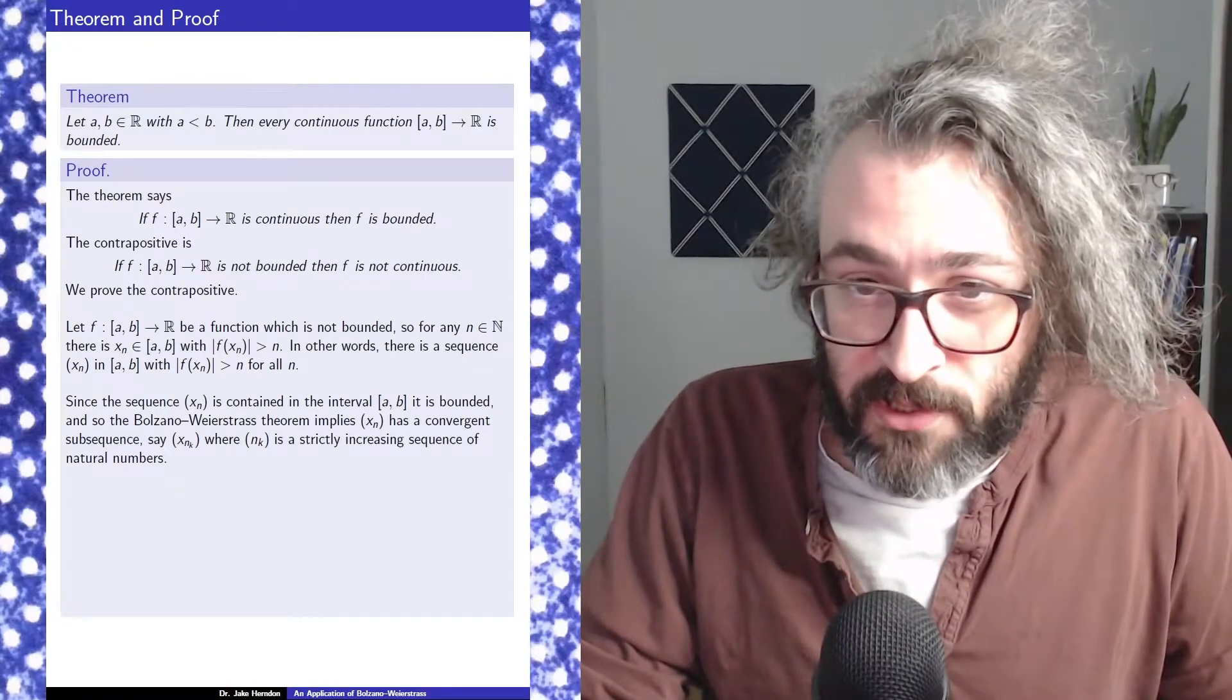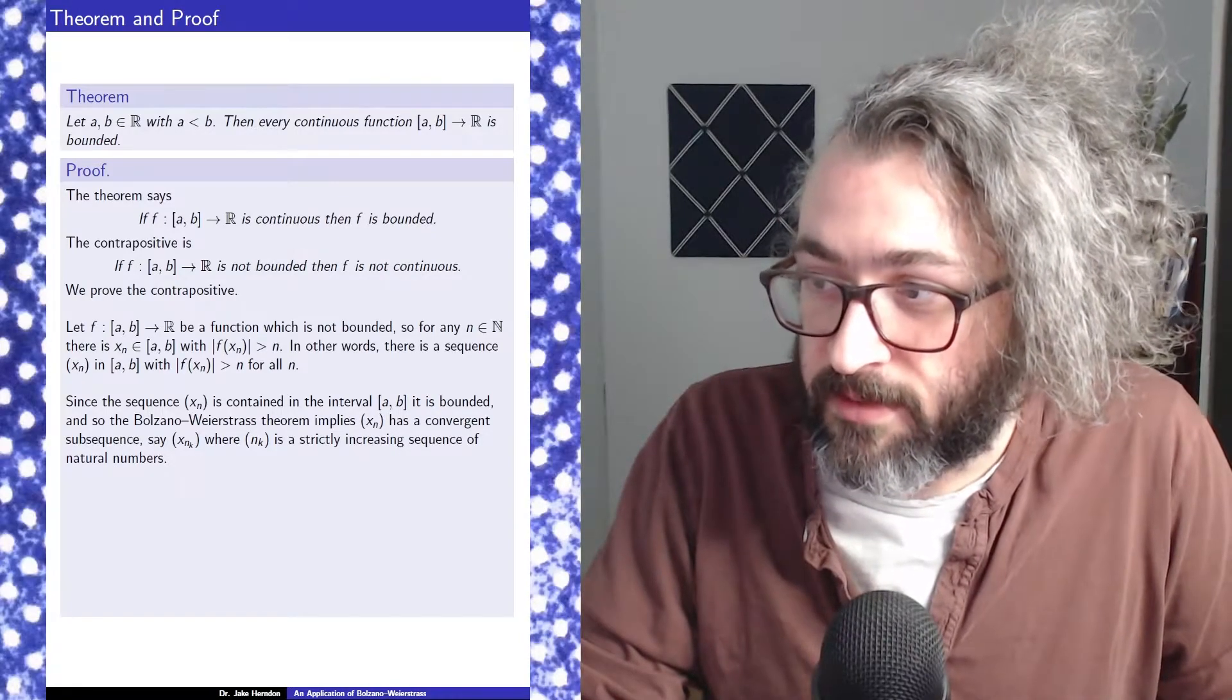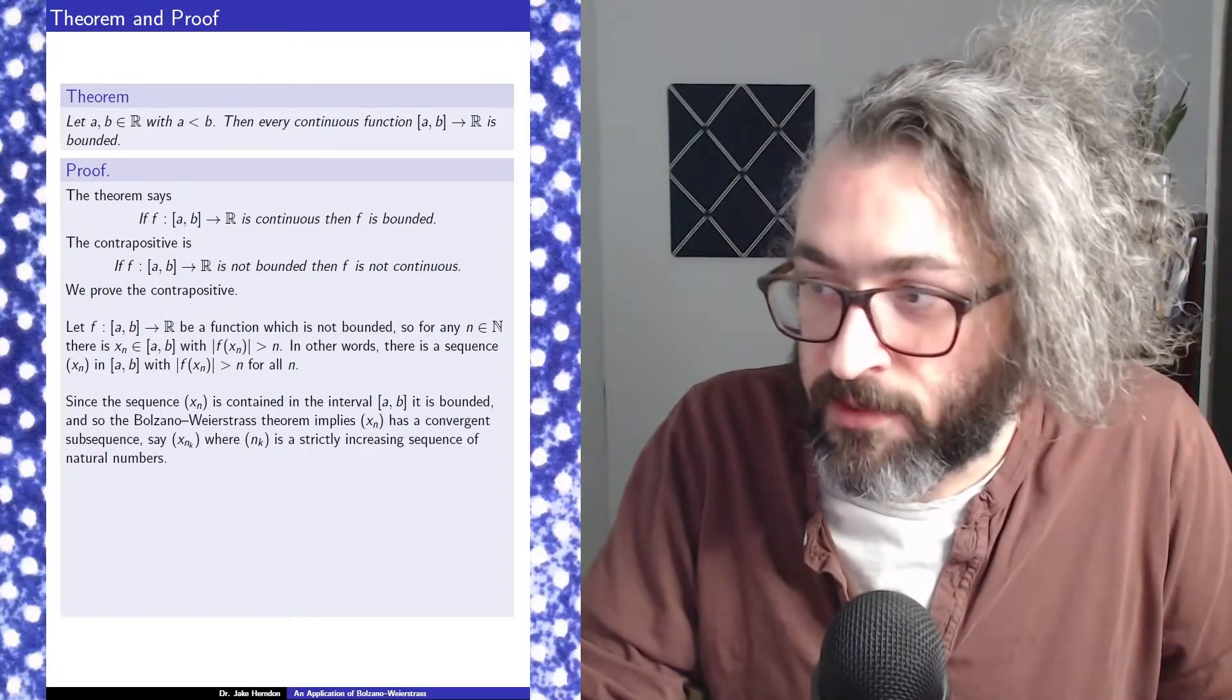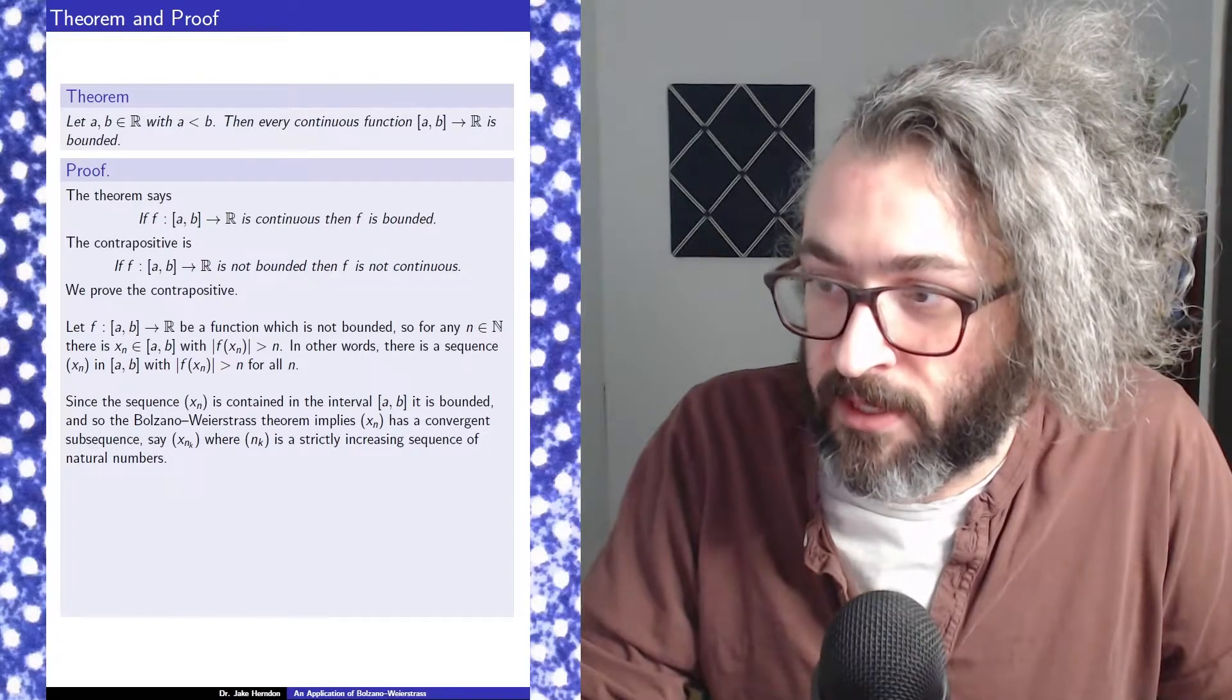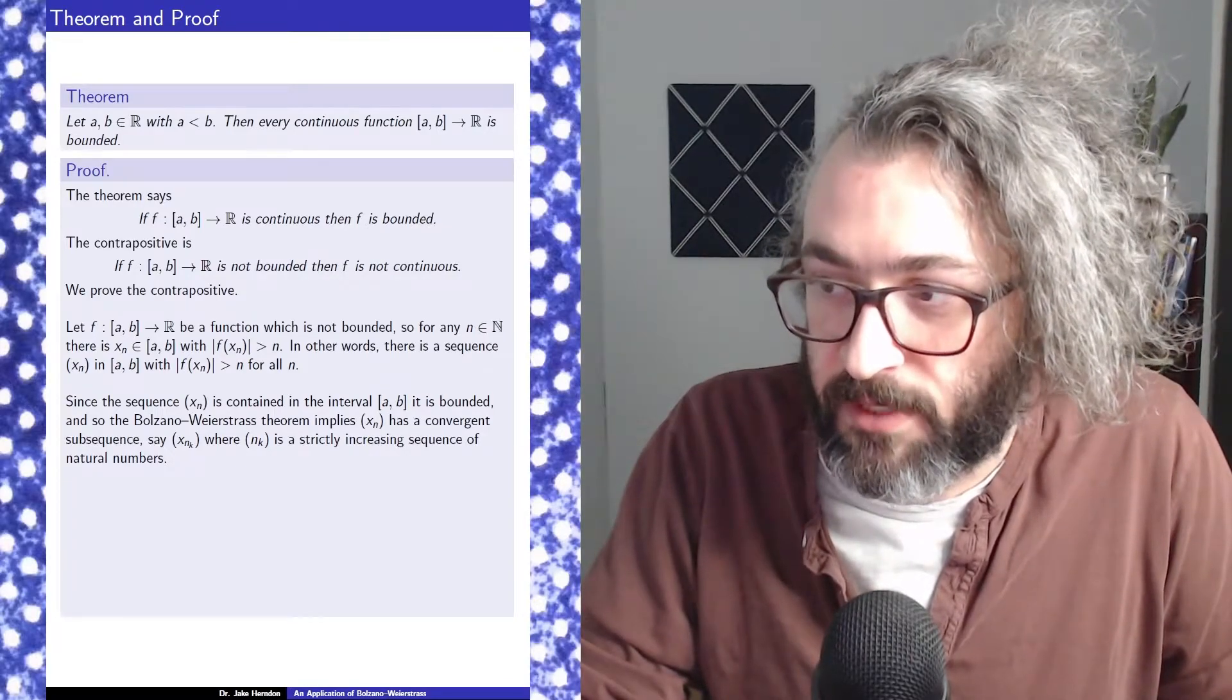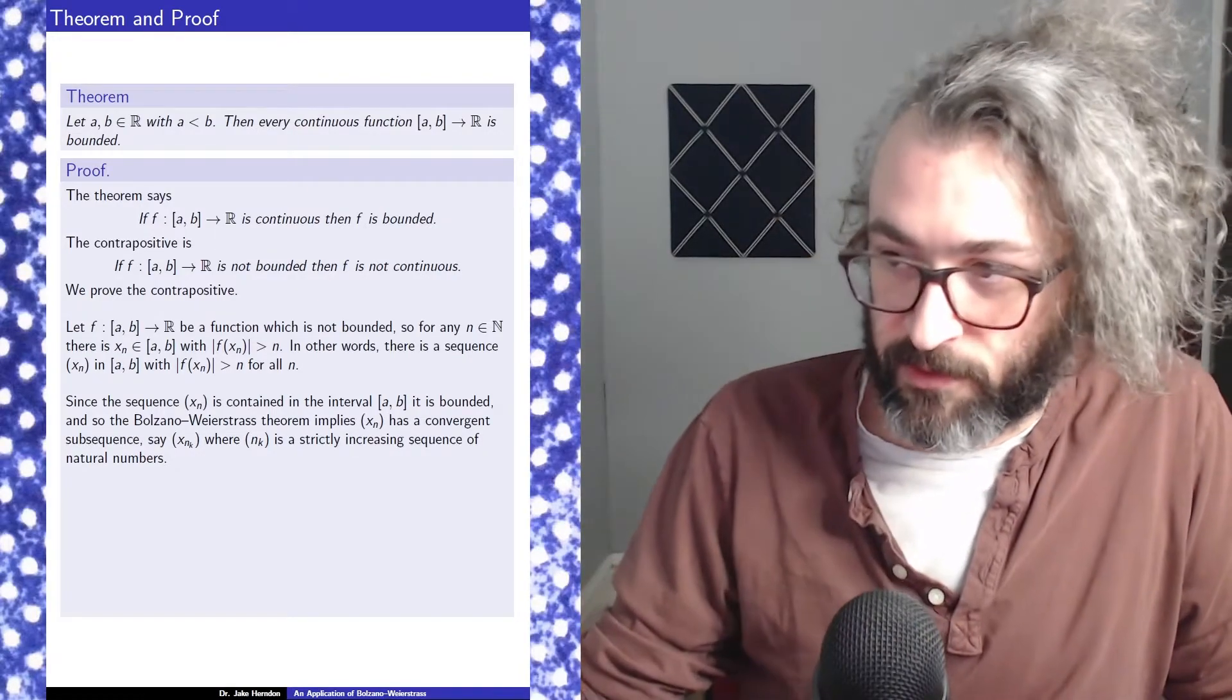All right, time for Bolzano-Weierstrass. Since the sequence x_n is contained in the interval from a to b, it is bounded. And so the Bolzano-Weierstrass theorem implies x_n has a convergent subsequence, say x_{n_k}, where n_k is a strictly increasing sequence of natural numbers.